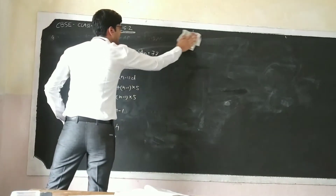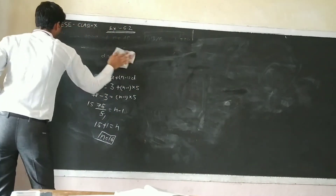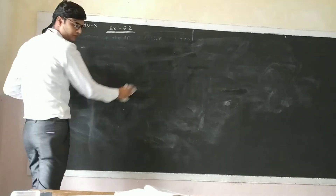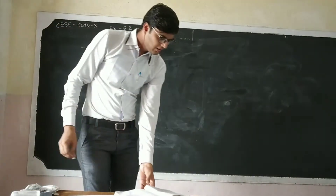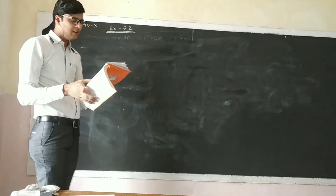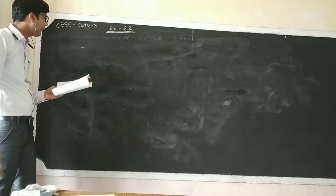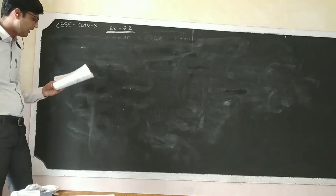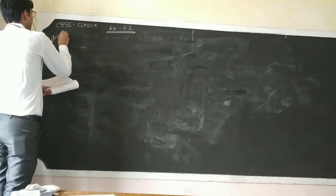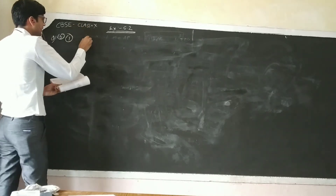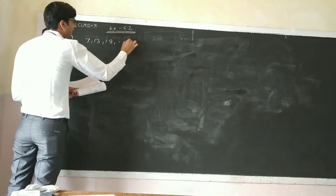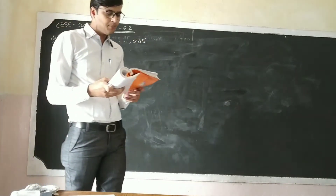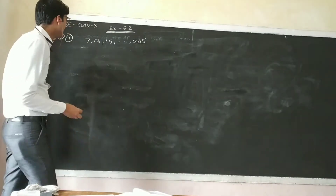Now question number 5: find the number of terms in each of the following APs. The first sub-question is the AP: 7, 13, 19, ..., 205. We need to find the number of terms, meaning the value of N.